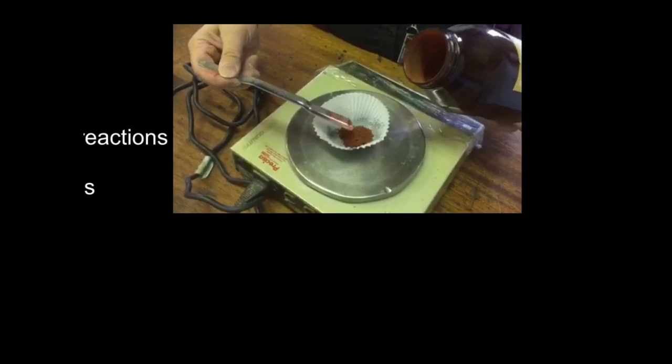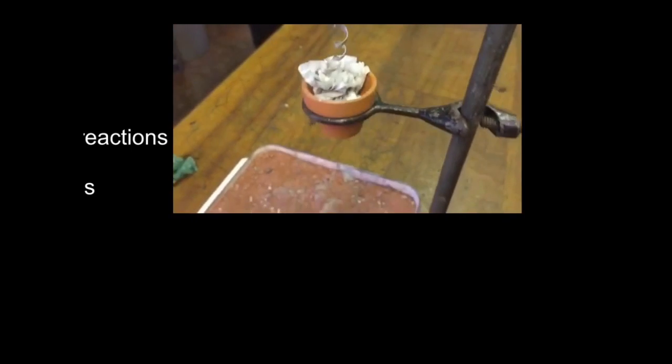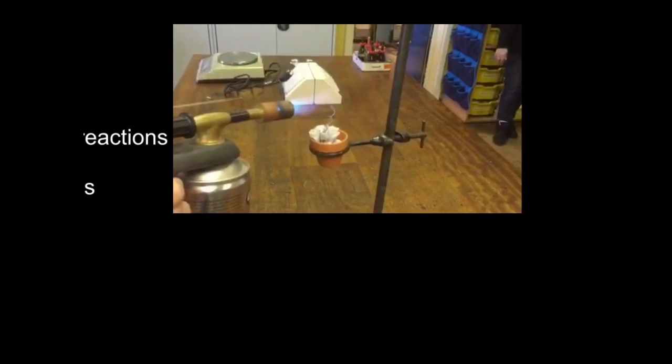So there's aluminium, iron oxide which looks reddish. You use a magnesium wick, you set fire to it, and then you stand well back.